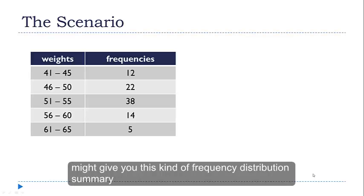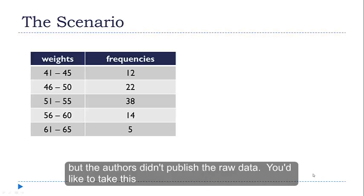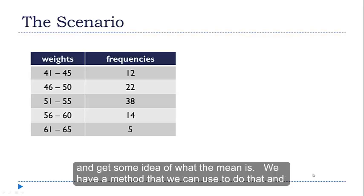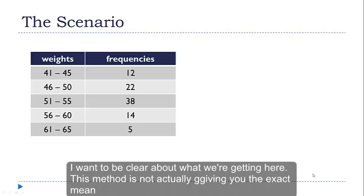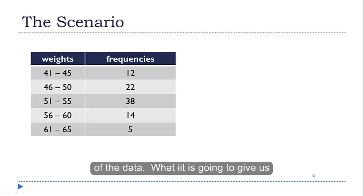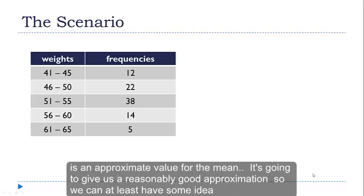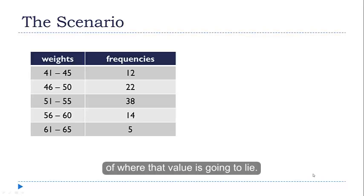The article might give you this kind of frequency distribution summary, but the authors didn't publish the raw data, and you'd like to take this and get some idea of what the mean is. And we have a method that we can use to do that, and I want to be clear about what we're getting here. This method does not actually give you the exact mean of the data. What it is going to give us is an approximate value for the mean.